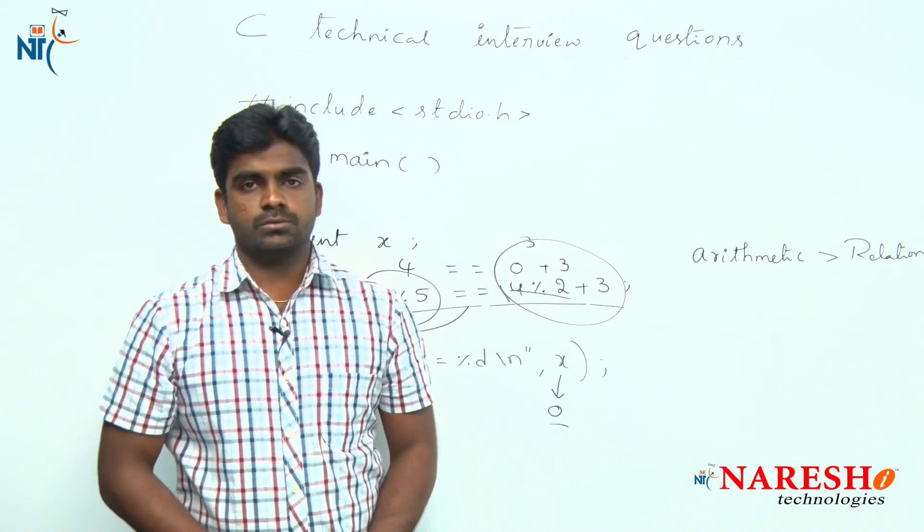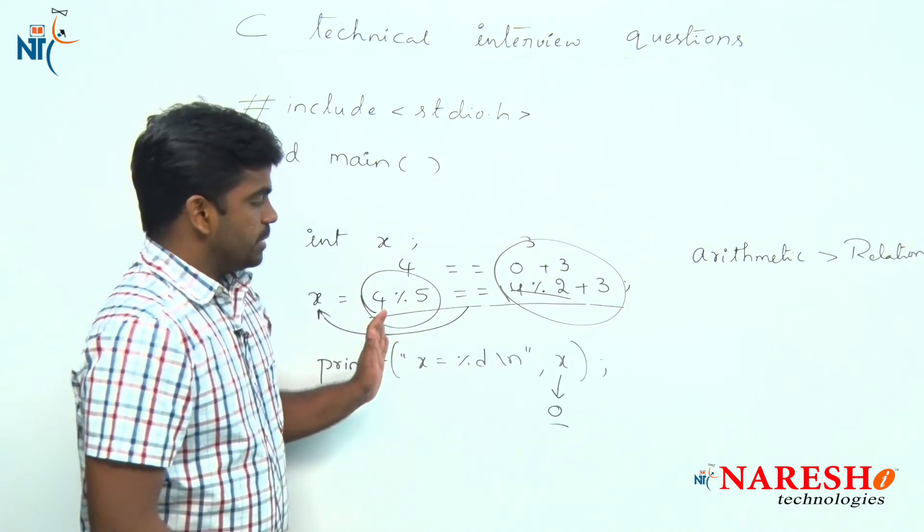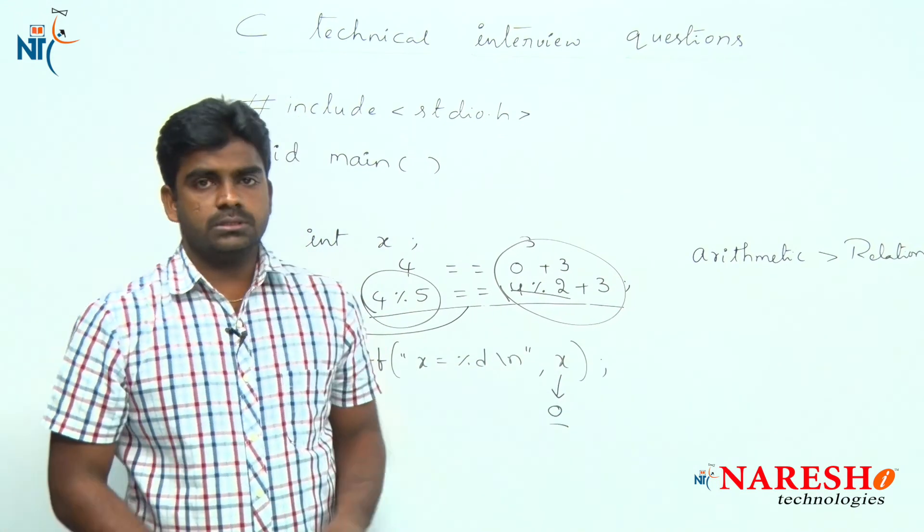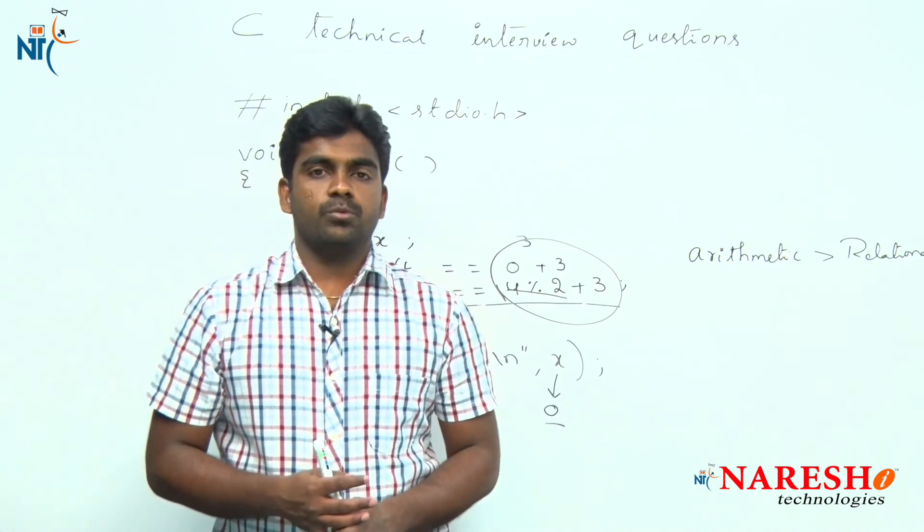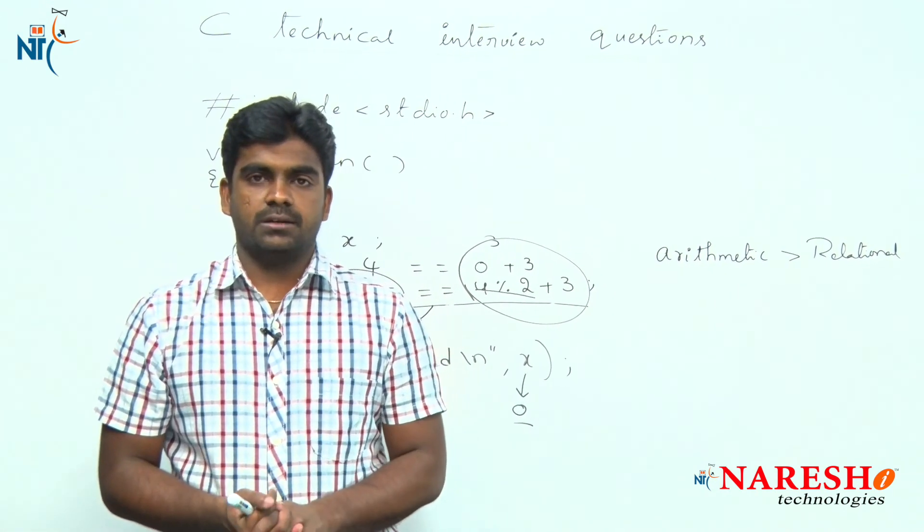The final x value is 0. This is how this program executes and the x value is 0. Hope you understood. For more videos please subscribe to Naresh IT channel. Thank you.